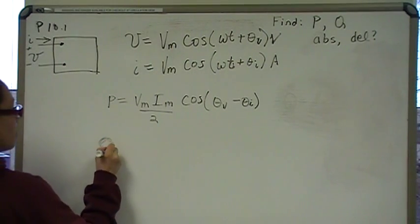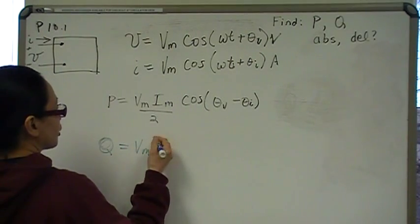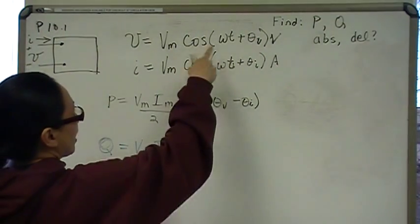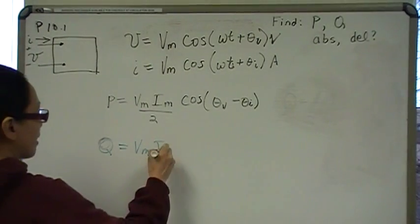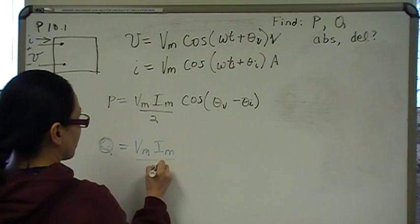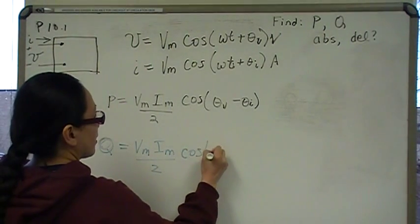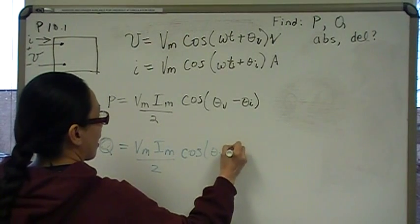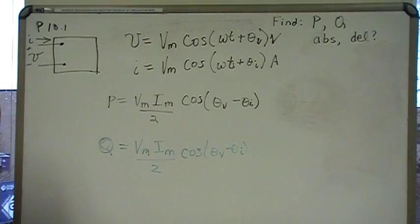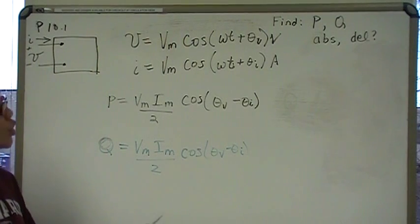So Q equals the amplitude of the voltage sinusoid times the amplitude of the current sinusoid, over 2, times cosine of theta-V minus theta-I. The key to this problem is converting everything in terms of cosines for the P and Q formulas to be correct. So make sure you do that.